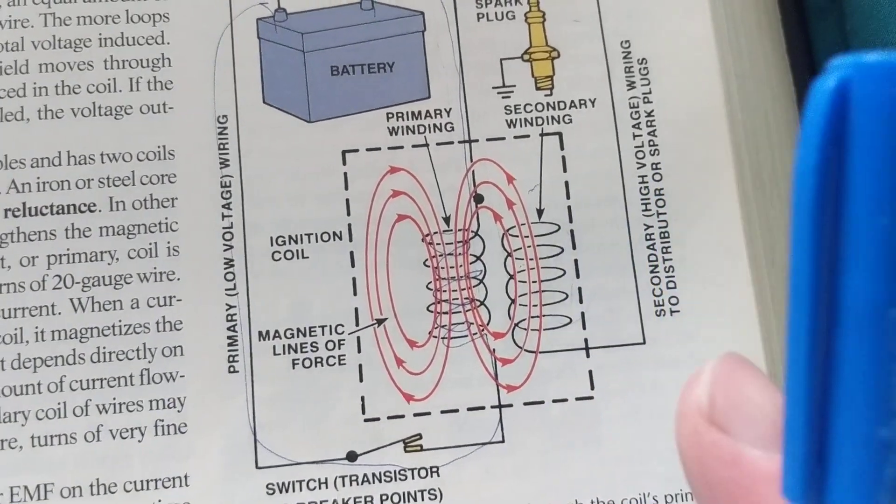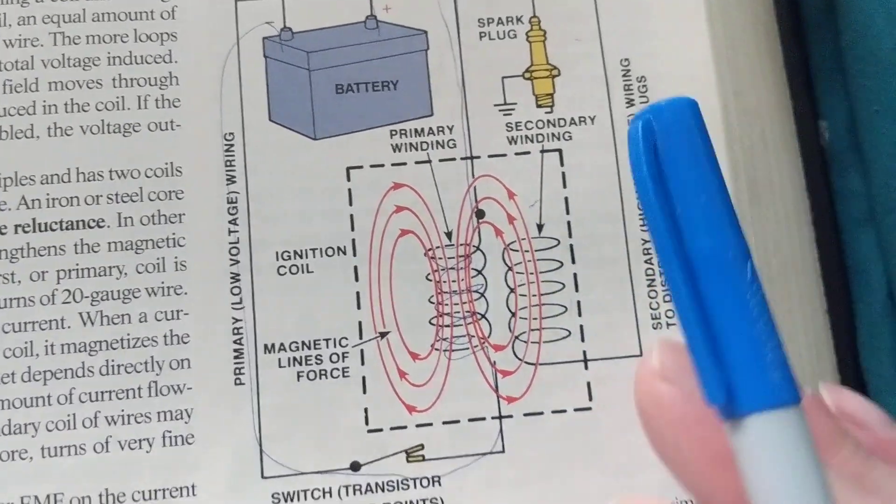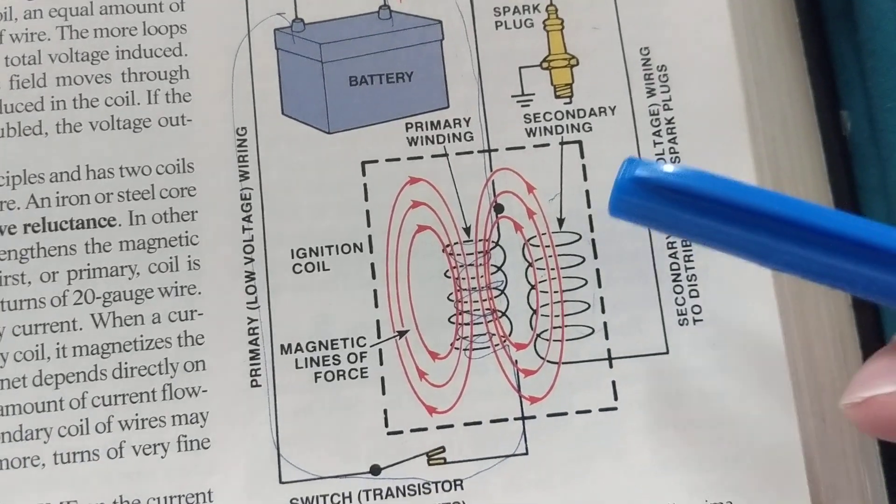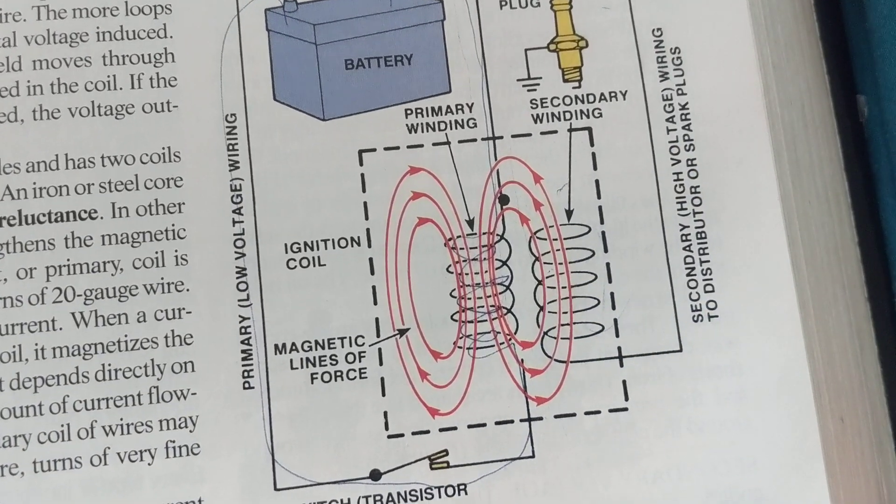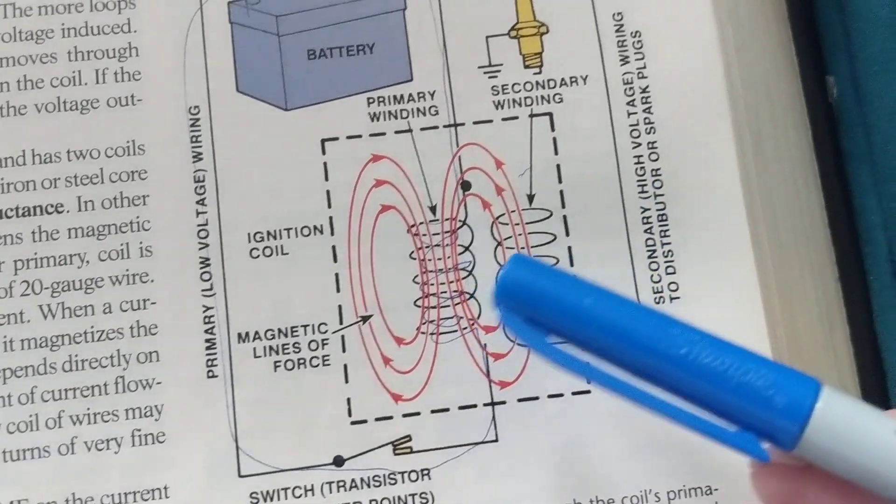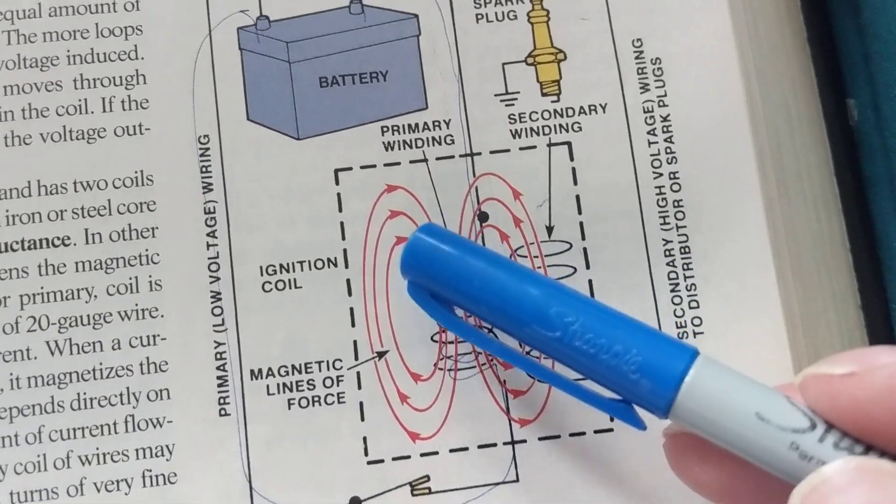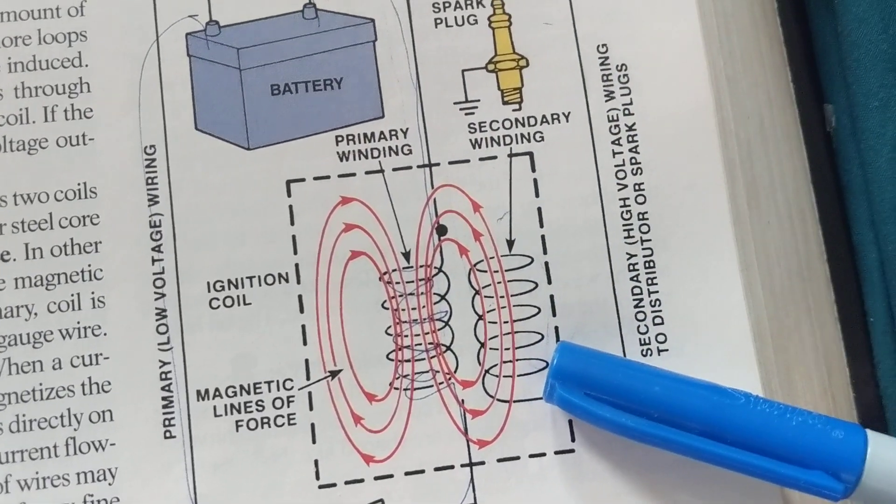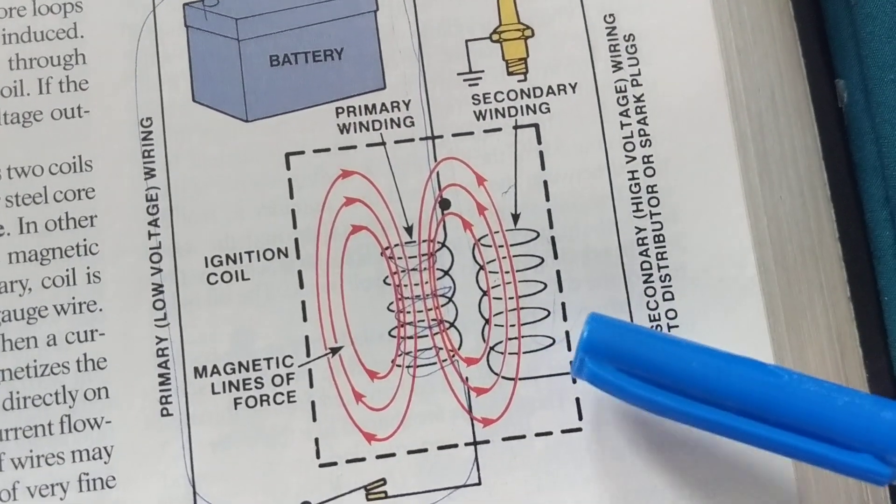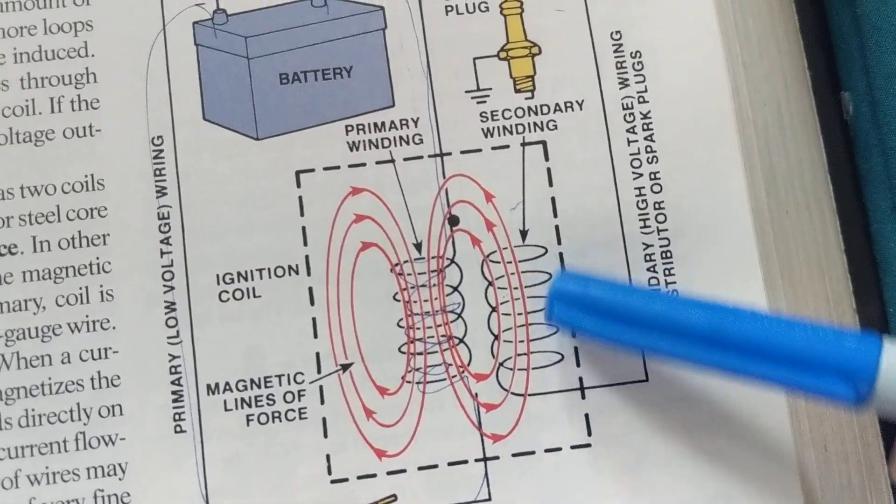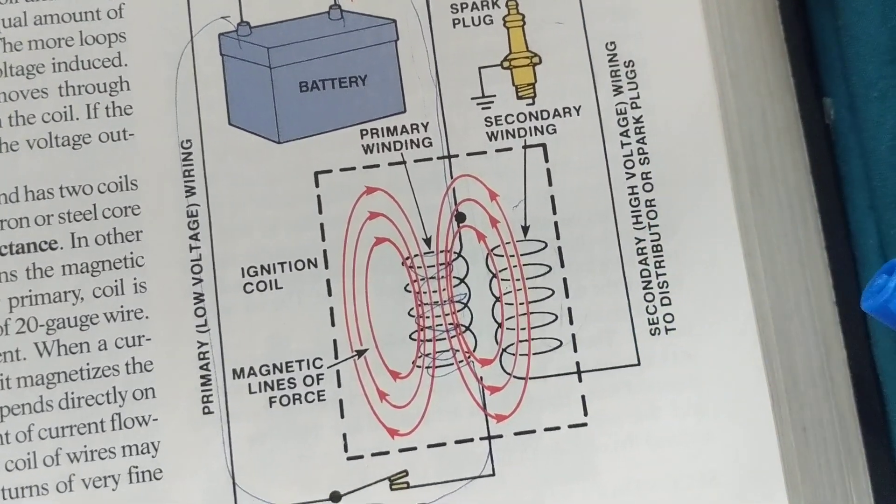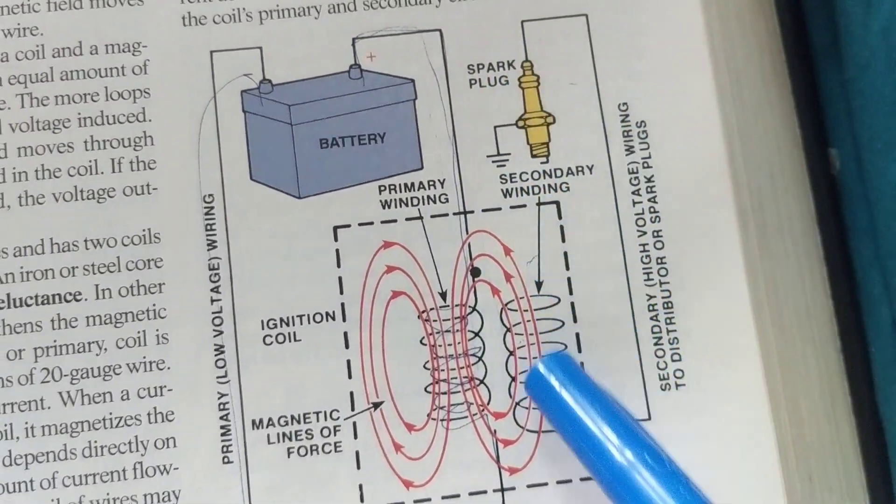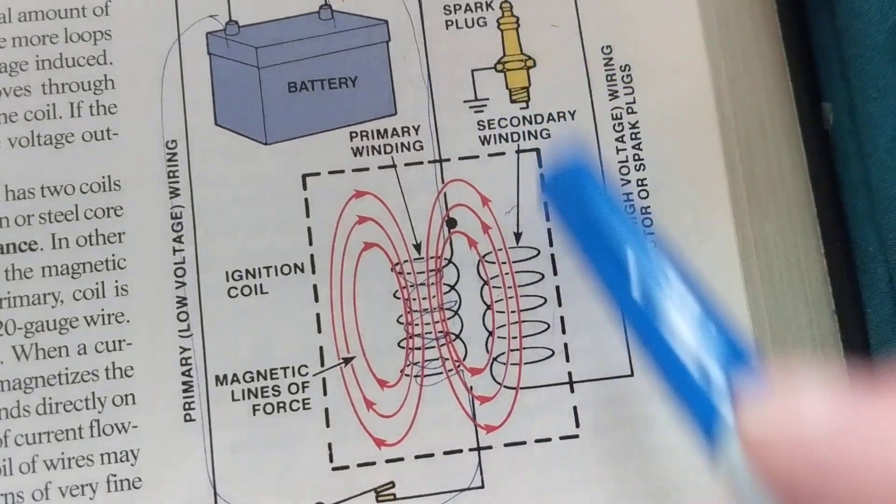Transformers can be step-up transformers - more voltage on the secondary - or step-down, meaning less voltage on the secondary. Obviously if I have a transformer and I have a step-down transformer, more voltage on the primary, less voltage on the secondary, but the current will be much higher. So it's the opposite effect.